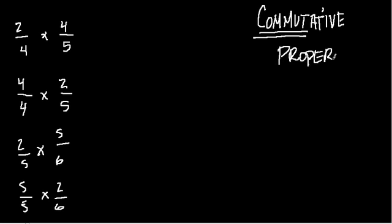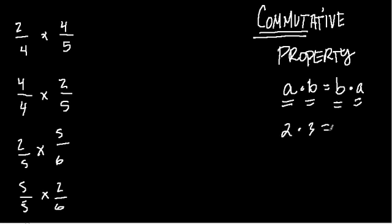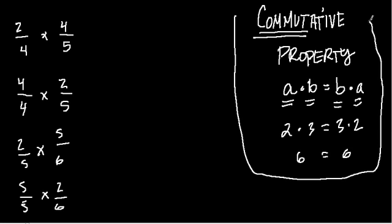So we can move numbers around without changing the answer, and usually you might see this in a textbook as something like this: a·b = b·a. This just means that some number a times b will give you the same thing as b times a. So if you had 2 times 3, that would equal 3 times 2. In both cases you get 6. That's the idea of the commutative property, and it turns out it's very useful, like in these fractions.